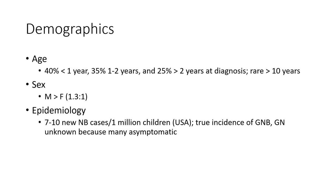Demographics: 40% less than one year, 35% one to two years, and 25% more than two years. Median age more than 10 years. Predominant in males. Epidemiology: 7 to 10 new neuroblastoma cases per 1 million children in the U.S. True incidence of ganglioneuroma and GNB are unknown because many are asymptomatic.